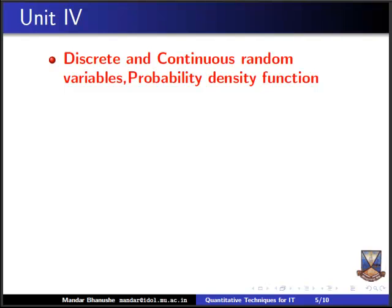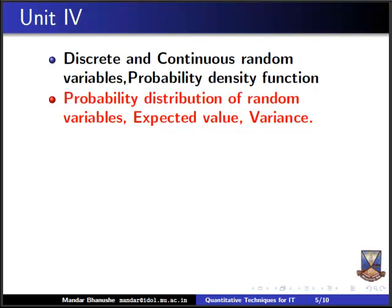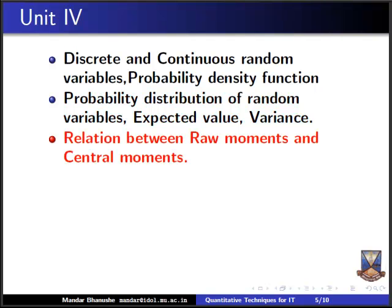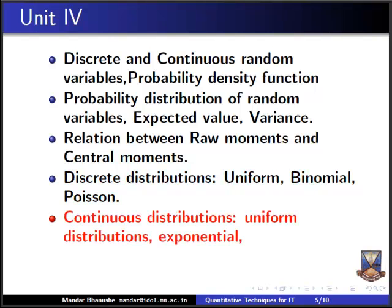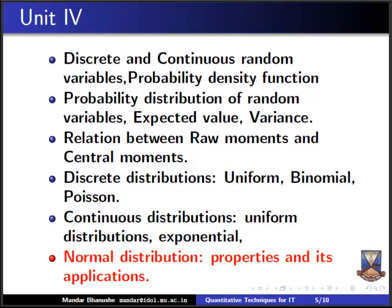In unit four we move ahead in statistics to probability. We start with discrete and continuous random variables, probability density functions, probability distributions, expected value, variance, and the relation between raw moments and central moments. Then we cover discrete distributions — uniform, binomial, and Poisson — followed by continuous distributions including exponential distribution, and finally normal distribution, its properties and applications.